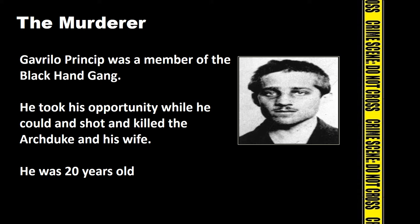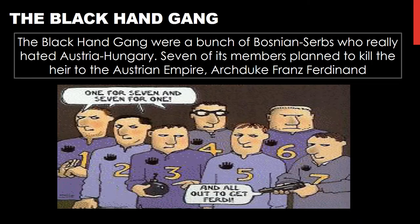The murderer in this event is a man called Gavrilo Princip. He was a member of the Black Hand Gang - a terrorist group. He took this opportunity and shot and killed the Archduke and his wife. He was only 20 years old when he killed the Archduke. The reason he kills the Archduke is that the Black Hand Gang don't like the fact that Austria-Hungary is trying to expand its empire. They are Bosnian Serbs who really hated Austria-Hungary, and several of its members planned to kill the heir to the Austro-Hungarian throne.